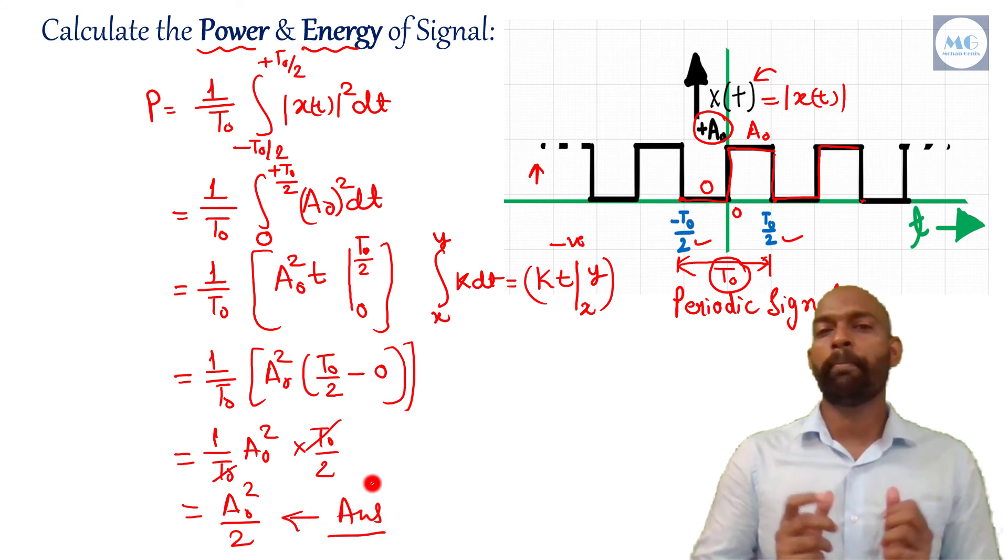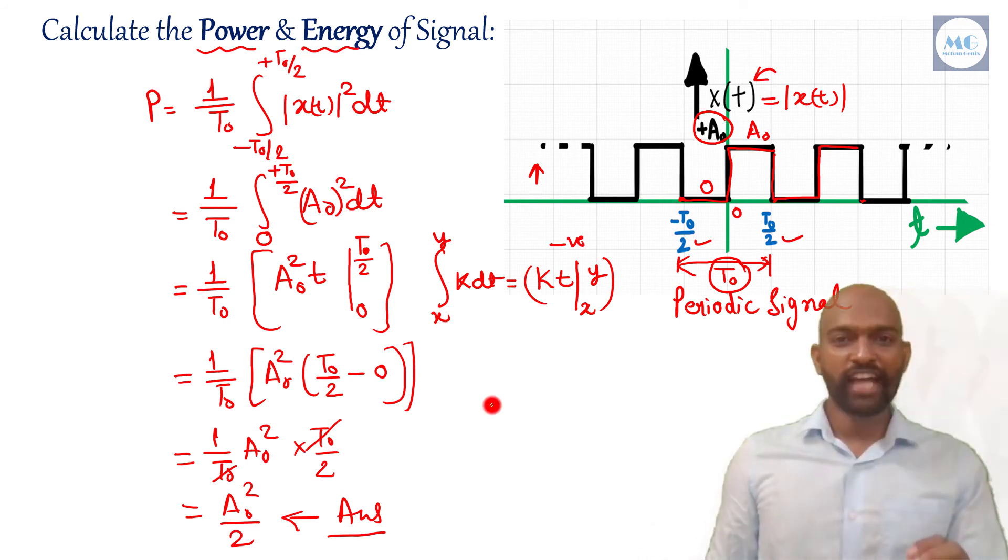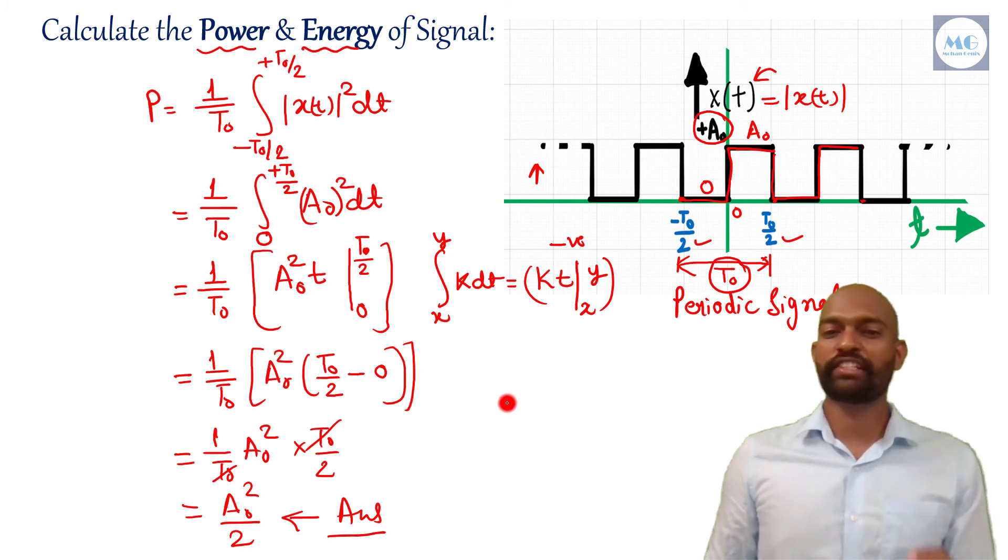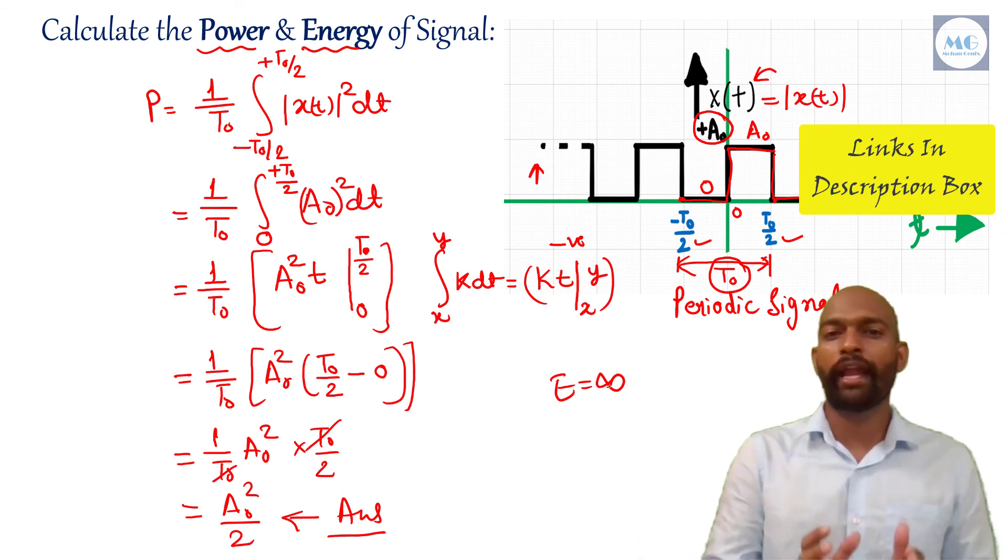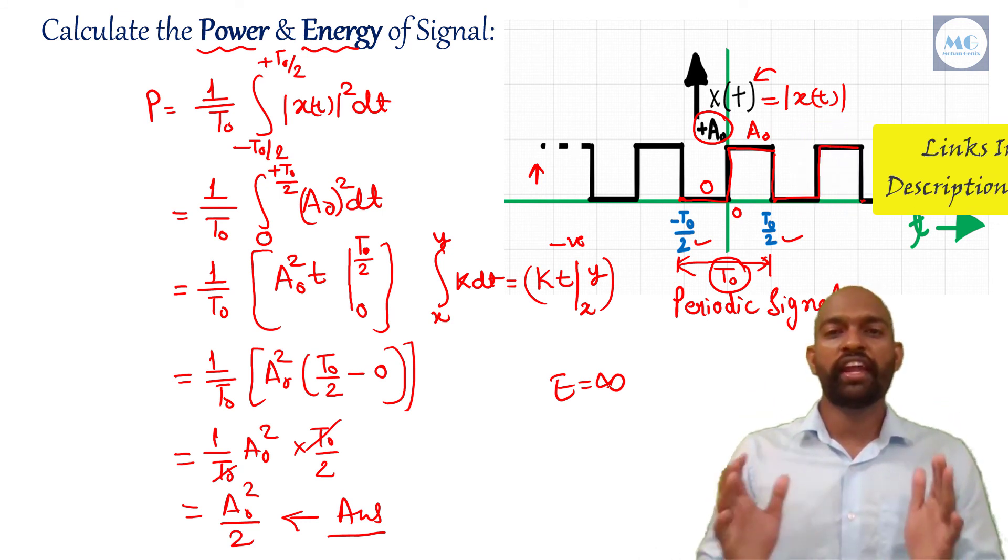In this way, we simply find power of this signal. And what will be the energy of this signal? As I told you all in the previous lecture, for any power signal, energy is infinite. So for this signal also, energy will be infinite. In this way, we have understood how to calculate power and energy of any square signal.